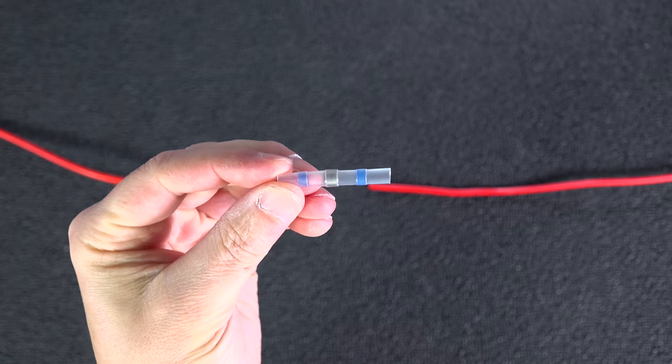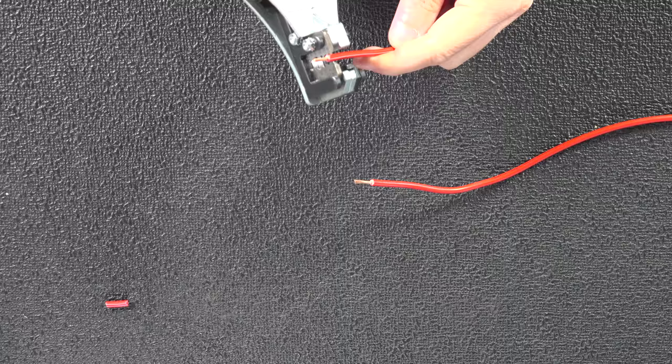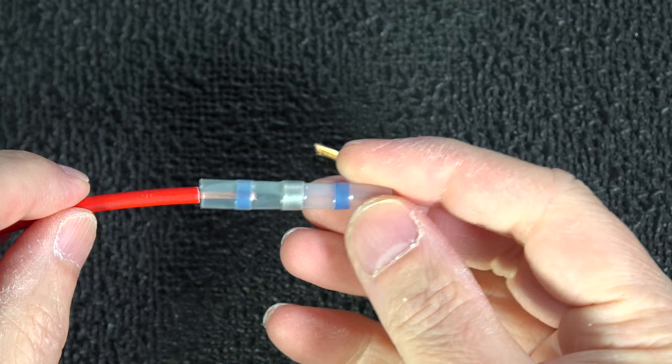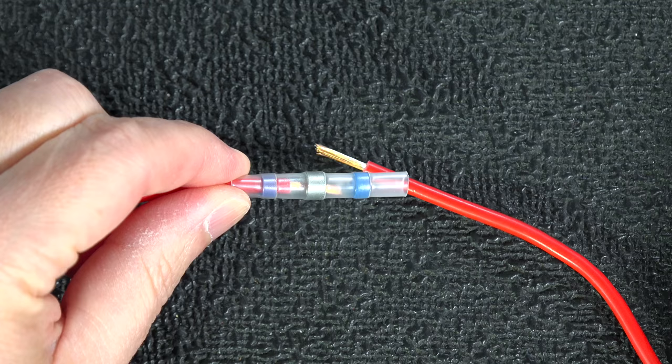Using these connectors is easy, but there are a few tips to getting good results. You're going to start by stripping a small amount of the insulation off of the end of each wire. Then you can insert the wires into the connector itself. But you want to pay attention to those colored bands, because they're designed to tightly grip the insulation of the wire.